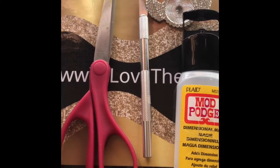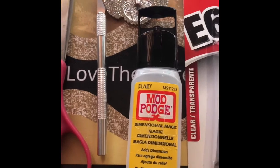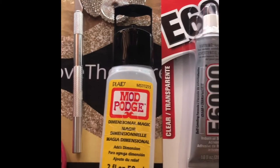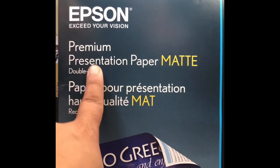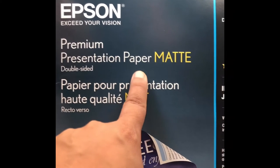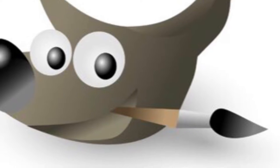You will need your scissors, your exacto knife, your bezel pendant, your mod podge dimensional magic, and we can't forget about your E6000 glue. We'll also be using Epson premium presentation paper matte, and I'll be using GIMP digital software.